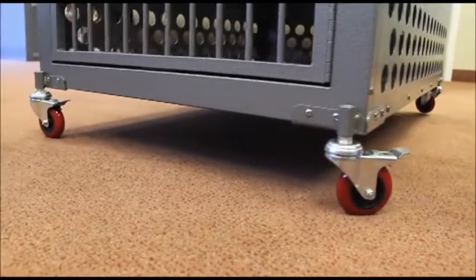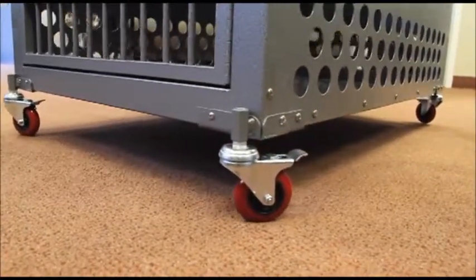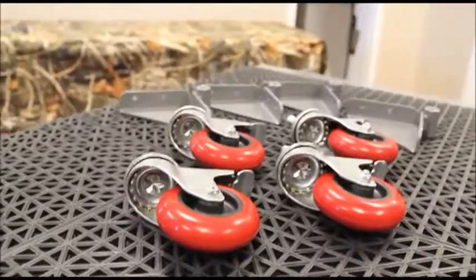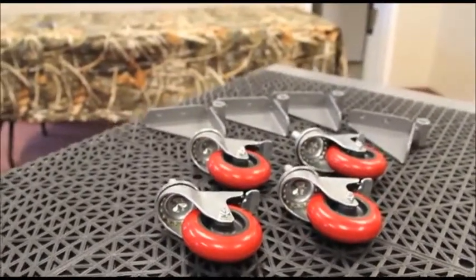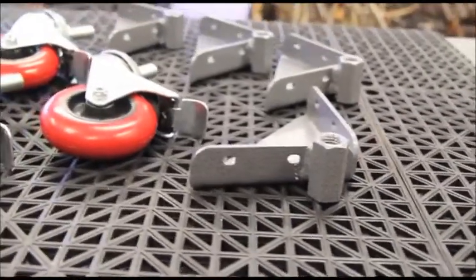Perhaps the handiest accessory to add to your crate is the removable caster wheel kit. Each kit includes the caster brackets, mounting hardware, and removable 3-inch casters.